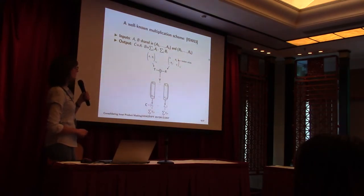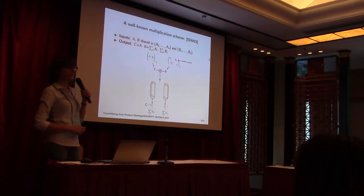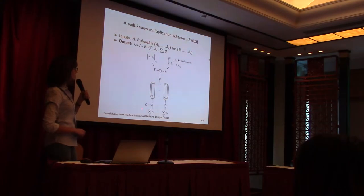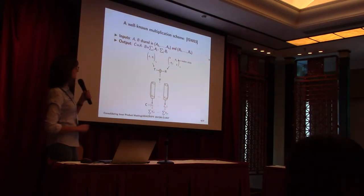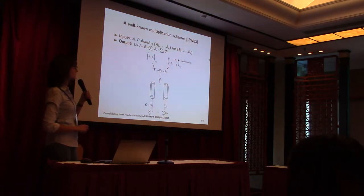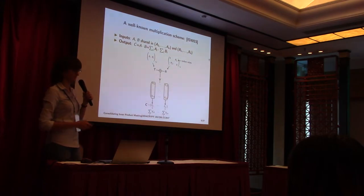We can see why we need these particular random bits: in order to guarantee correctness, we need the sum of the output shares to give exactly the product. The randomness cancels out, giving us correctness.